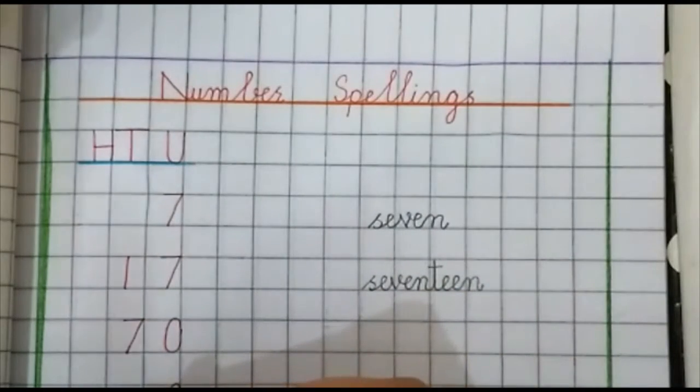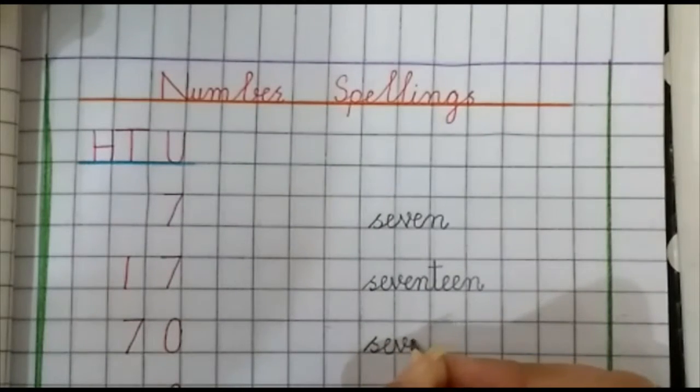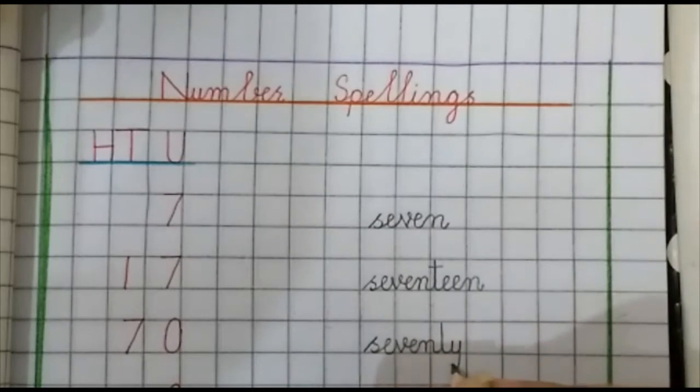Next number is 70. S, E, V, E, N, T, Y. Seventy.